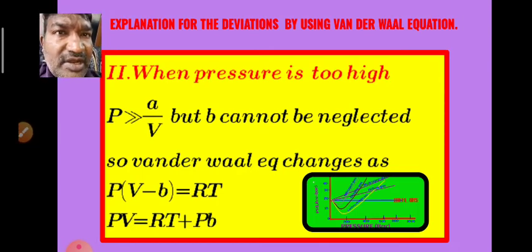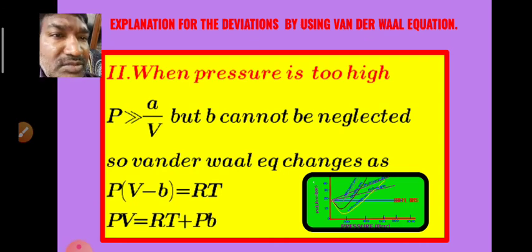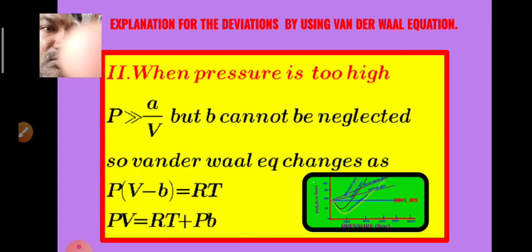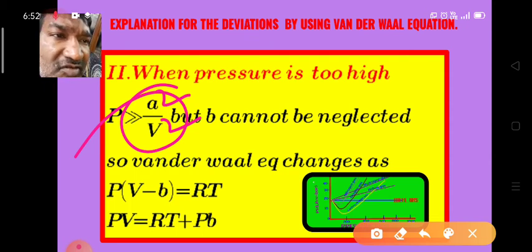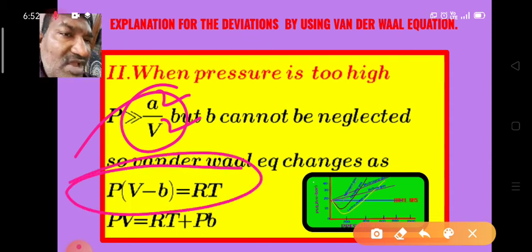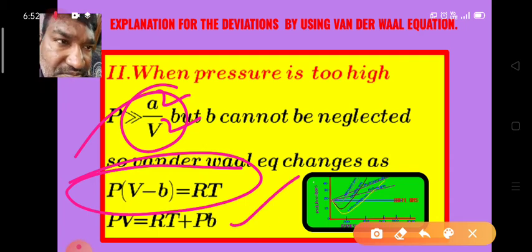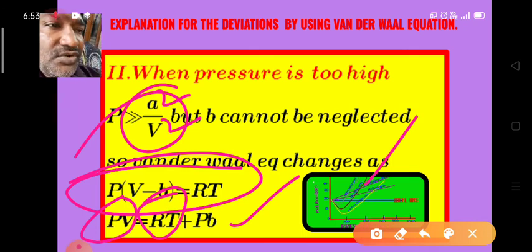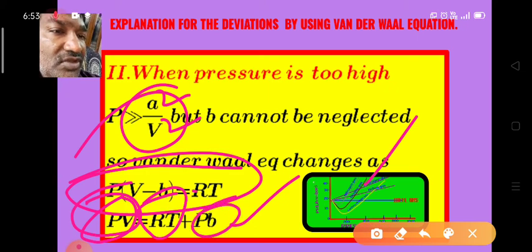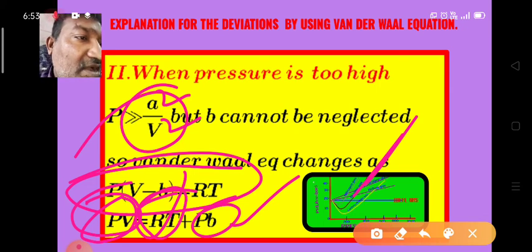At high pressures, the volume decreases and the a/V² term becomes negligible. The Van der Waals equation reduces to P(V − b) = RT, and rewriting gives PV = RT + Pb. Since PV is greater than RT, we observe a positive deviation at high pressures.